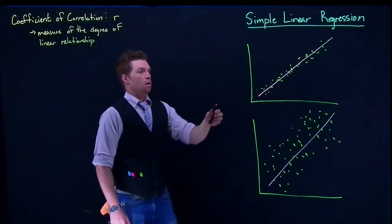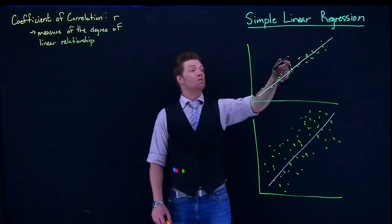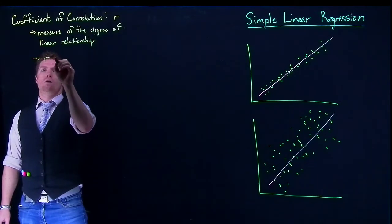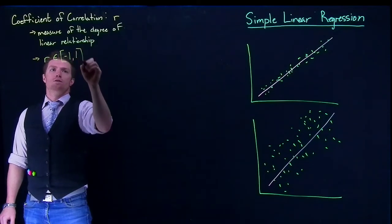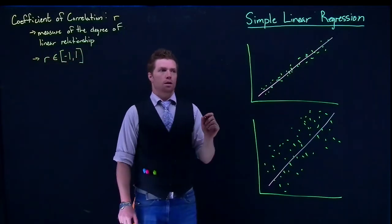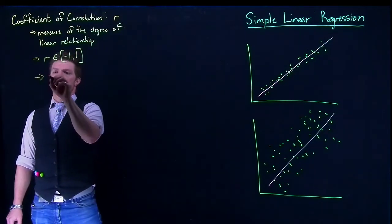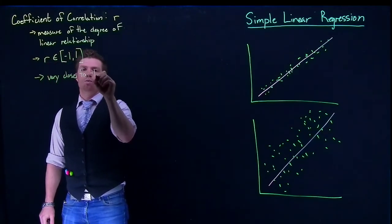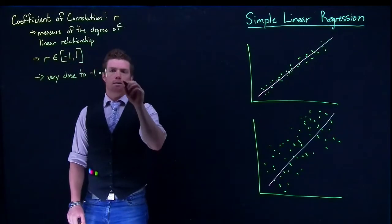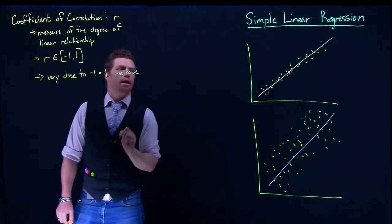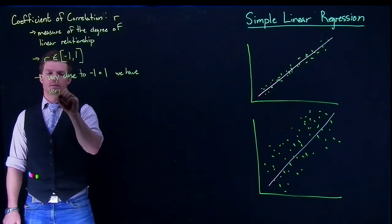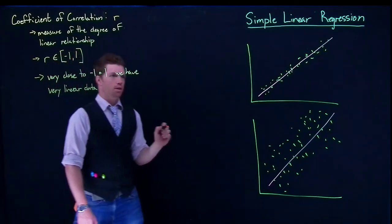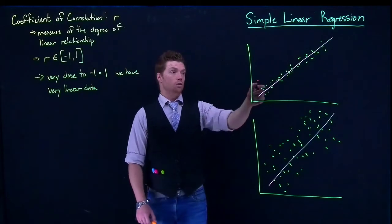So just simply like how close is our data to the line. It is contained within negative one to one. It's going to be between one of those values. So if we are very close to negative one or one, it means that we have very linear data or our data is also very tight to the line.